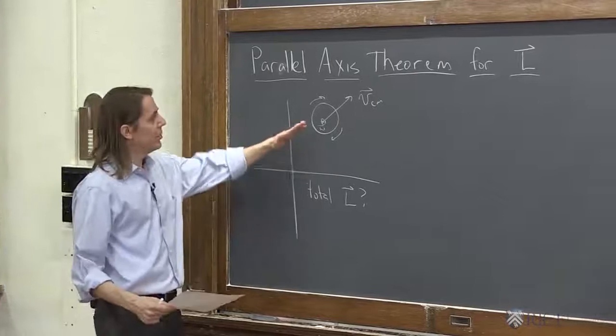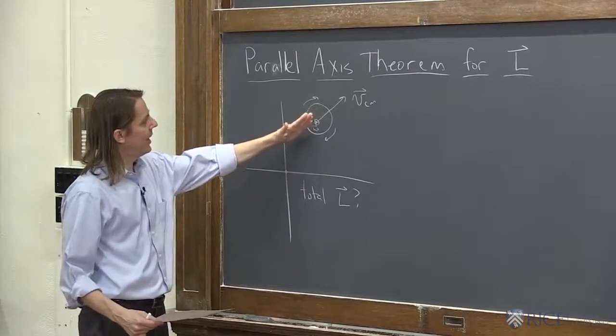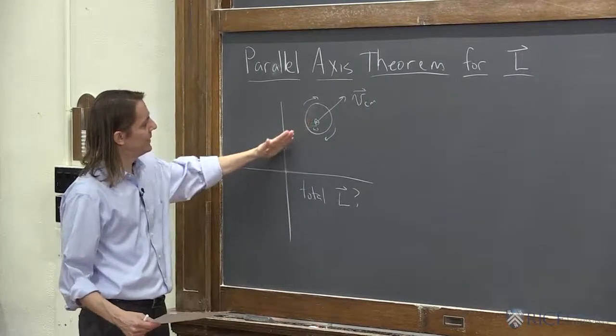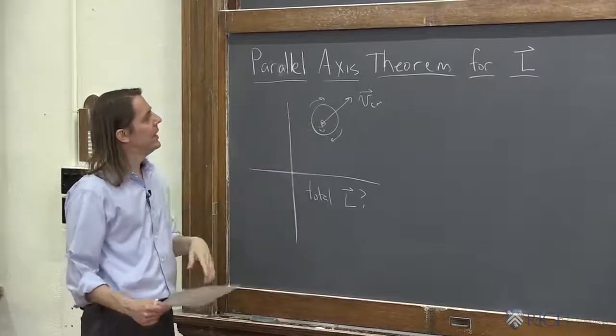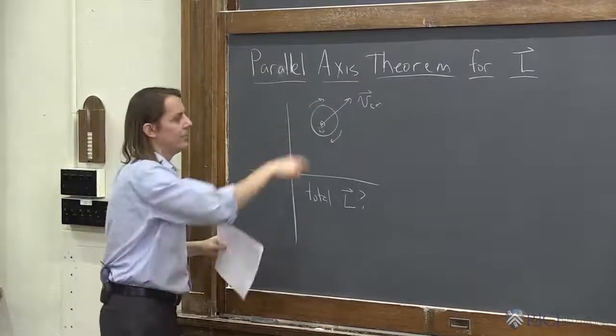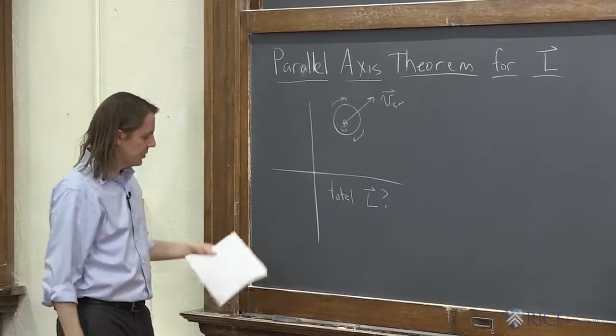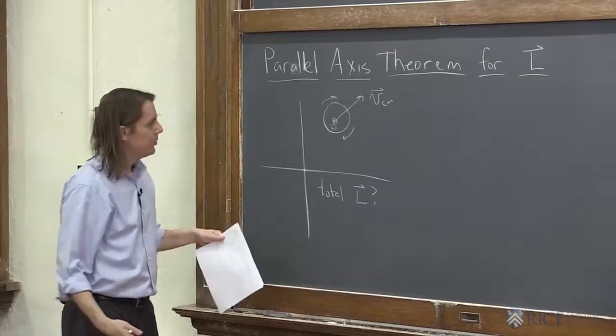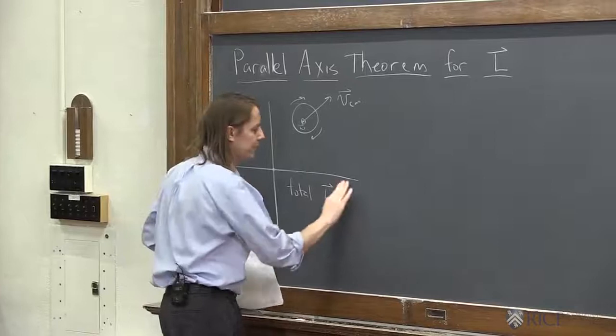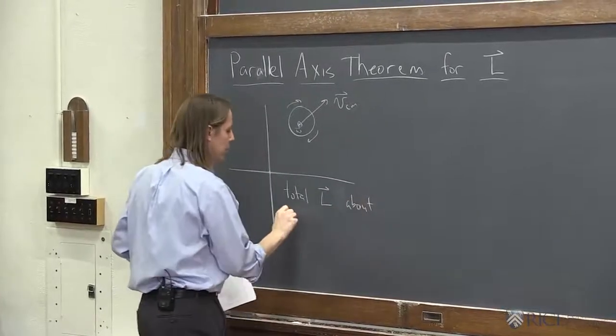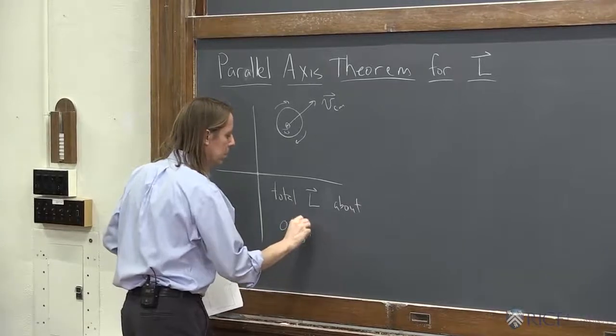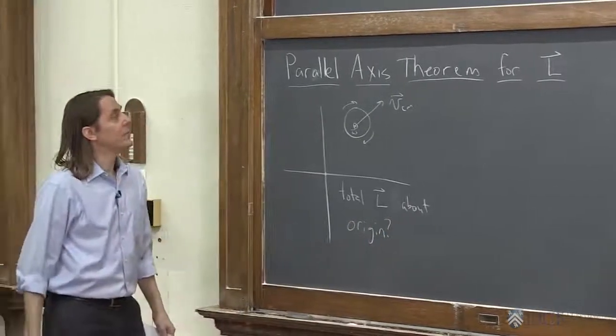It's got some L because it's moving with respect to the origin. I accidentally drew it almost on line with the origin, but I didn't quite. So it will have some L due to its translation, and it will also clearly have angular momentum due to its rotation. So how do we get the total L about the origin?